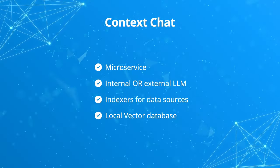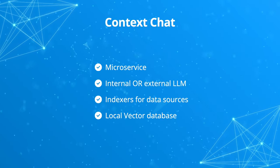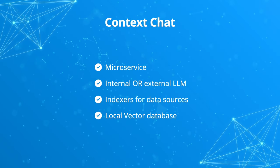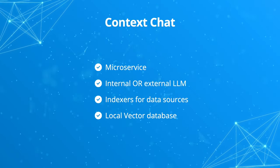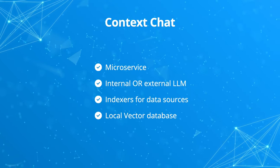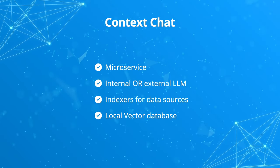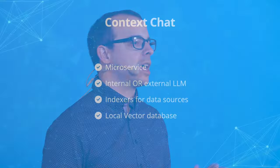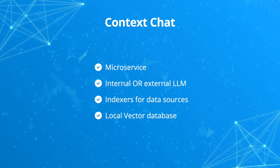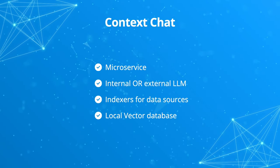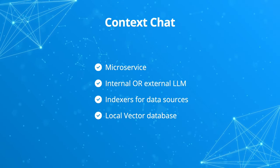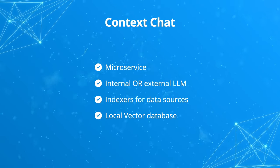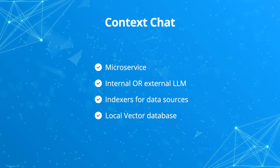Let's talk quickly about how this works. Context Chat runs as a microservice alongside the Nextcloud server. It will index data from your Nextcloud and store this information in a local vector database. When a user submits a query, the configured large language model then uses the information in the vector database to answer your questions. This is not limited to a specific large language model — you can use both locally running AI models or remote AI services, whatever you choose.